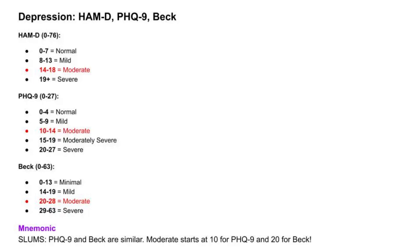For PHQ-9: 0 to 4 is normal, meaning little to no depressive symptoms. 5 to 9 is mild symptoms — some distress, but not necessarily meeting criteria for major depression. 10 to 14 is moderate depression, where clinical intervention may be beneficial. 15 to 19 is moderately severe, where symptoms are more pronounced and may significantly impact daily life. 20 to 27 is severe depression, often requiring immediate clinical attention.